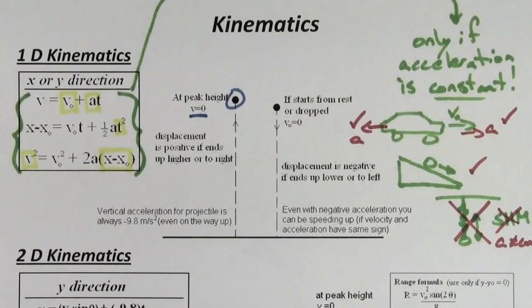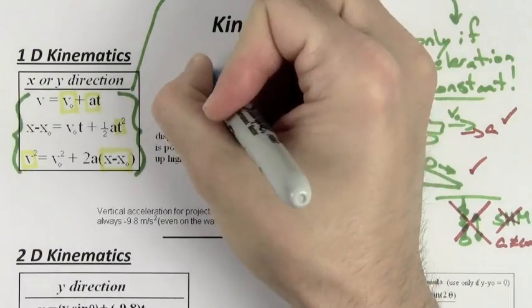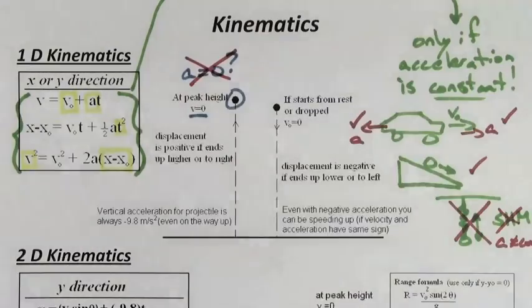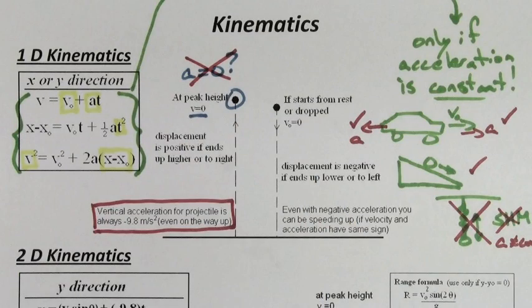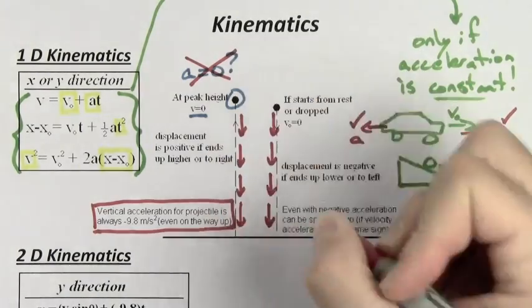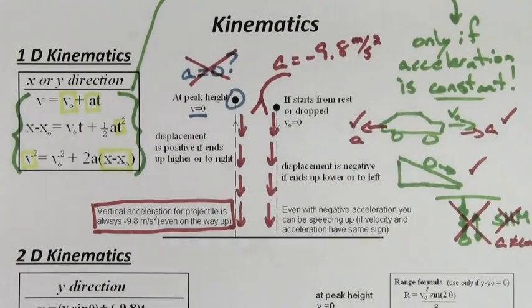At the peak height of a projectile, the velocity is zero for a split second. Is the acceleration zero at the top? No, the acceleration's negative 9.8 meters per second squared on the way up, at the top, and on the way down. And it's directed downward the whole way.